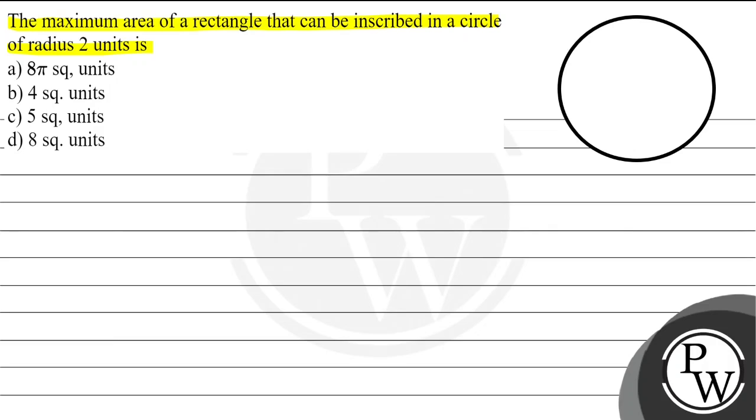So we have a circle, and we need to find a rectangle that fits inside this circle such that it has maximum area. The circle has a radius of 2 units. We need to fit a rectangle inside and find its maximum possible area.